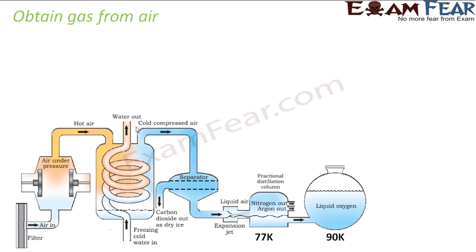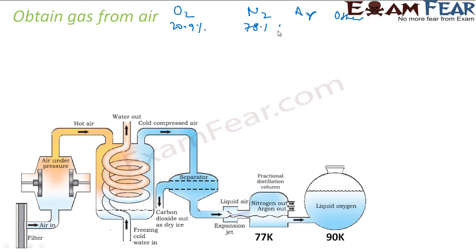Let's see how we can obtain gas from the air. Air has oxygen, nitrogen, argon, and other gases. Regarding composition: oxygen is almost 21.9 percent by volume, nitrogen is almost 78.1 percent by volume, argon is 0.9 percent by volume, and others are only 0.1 percent. These are by volume and we have to separate them.